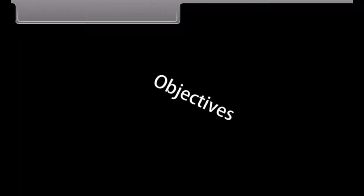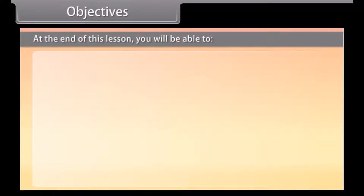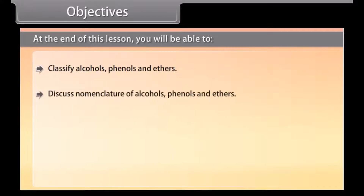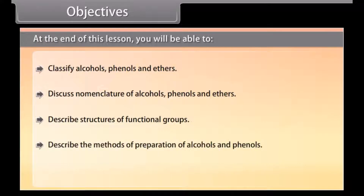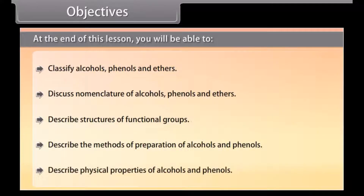Objectives. At the end of this lesson you will be able to: classify alcohols, phenols and ethers; discuss nomenclature of alcohols, phenols and ethers; describe structures of functional groups; describe the methods of preparation of alcohols and phenols; and describe physical properties of alcohols and phenols.